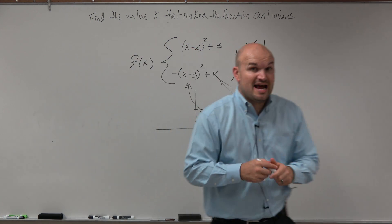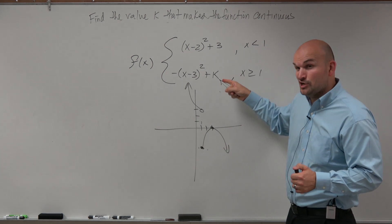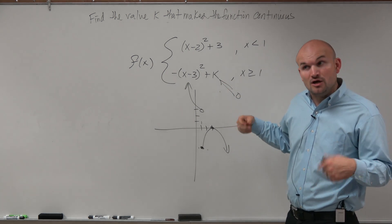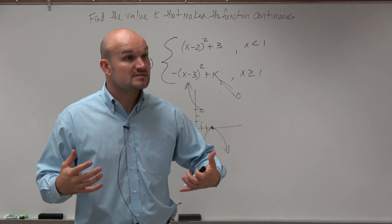Now you guys can see these graphs are not continuous, right? I mean, there's a jump discontinuity here. So k being 0 is not going to make them continuous. So what we want to do is find the value k that makes them continuous. Does that make sense?